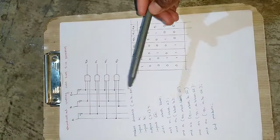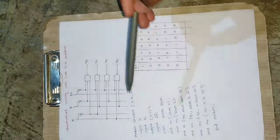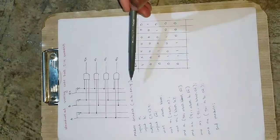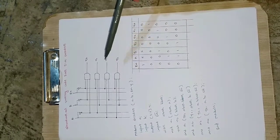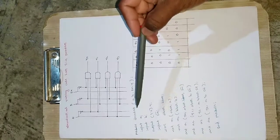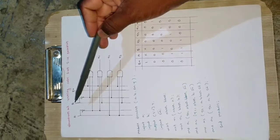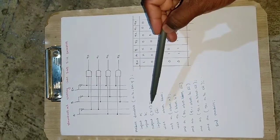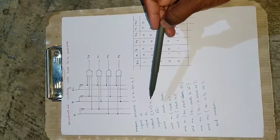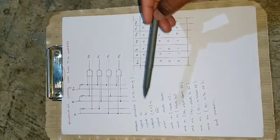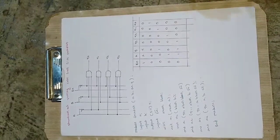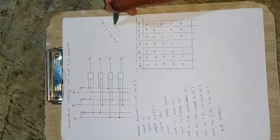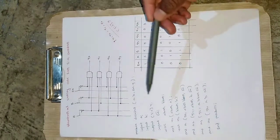Now I will write the code. 'module decoder' — 'decoder' is a user-defined name. Specify the inputs and outputs: A and B are inputs, enable is an input, and Y is the output vector. Instead of writing Y0, Y1, Y2, Y3 separately, I use a vector format: 'output [3:0] y'. This is equivalent to writing Y3, Y2, Y1, Y0 — represented as 3 down to 0 in vector format, consuming fewer lines.